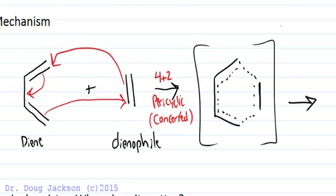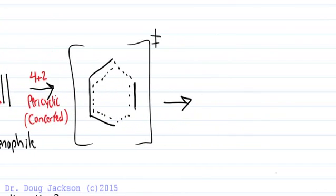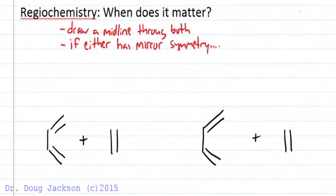We indicate the transition state with a double plus sign and the final product is cyclohexene. So how do we tell when does regiochemistry matter?